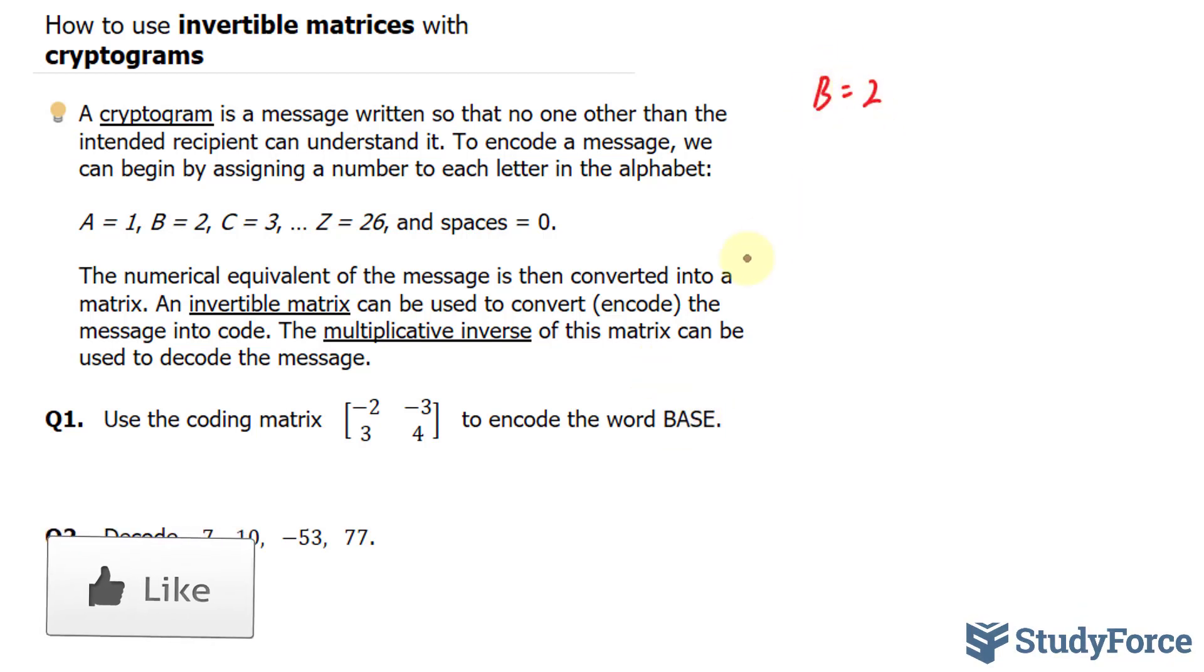For example, B is the second letter so it gets 2, A is the first, it's equal to 1, S is the 19th, and E is the 5th. I'll write this out as a matrix. So I have 2, 1, 19, and 5.